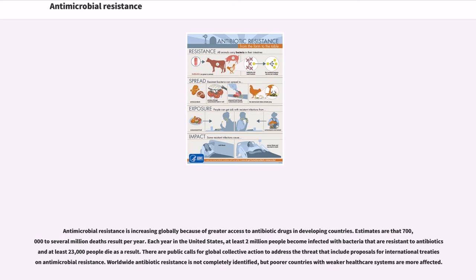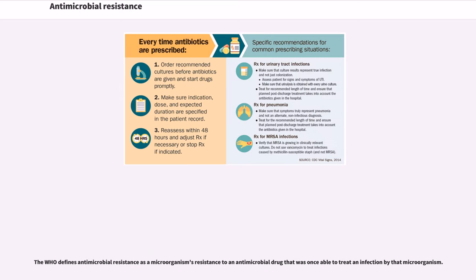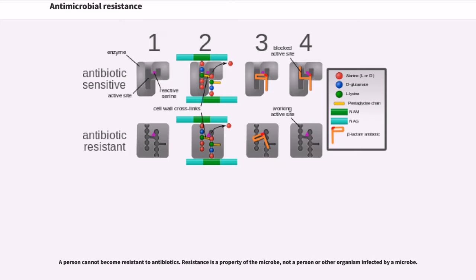There are public calls for global collective action to address the threat that include proposals for international treaties on antimicrobial resistance. Worldwide antibiotic resistance is not completely identified, but poorer countries with weaker health care systems are more affected. The WHO defines antimicrobial resistance as a microorganism's resistance to an antimicrobial drug that was once able to treat an infection by that microorganism. A person cannot become resistant to antibiotics; resistance is a property of the microbe.